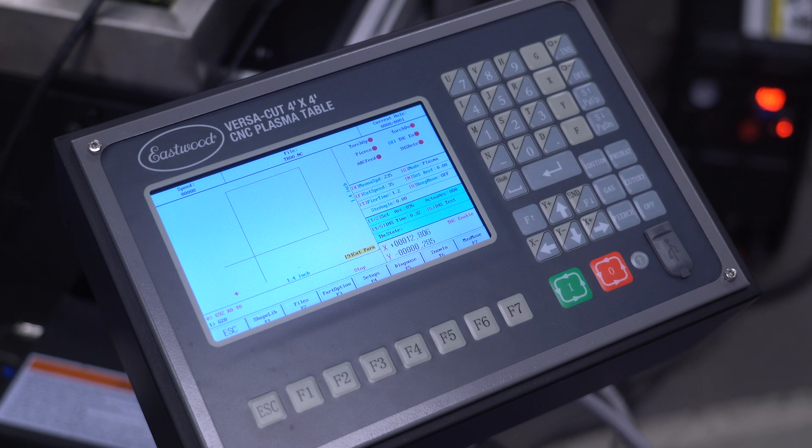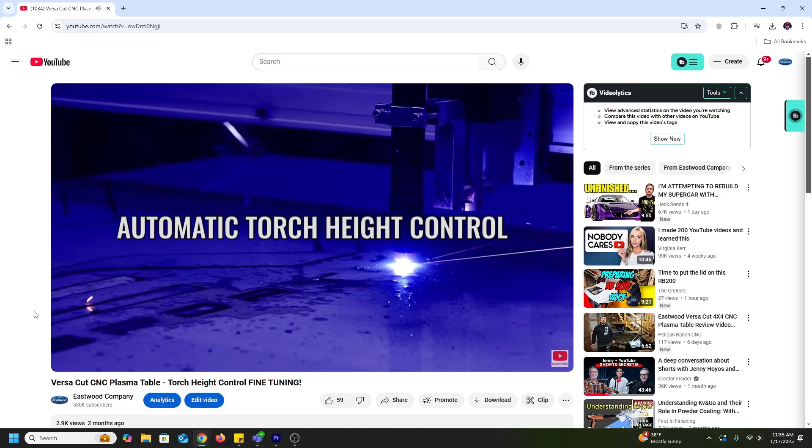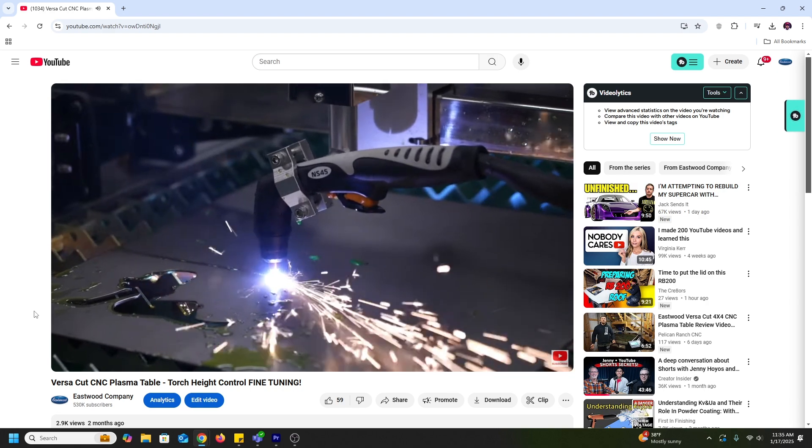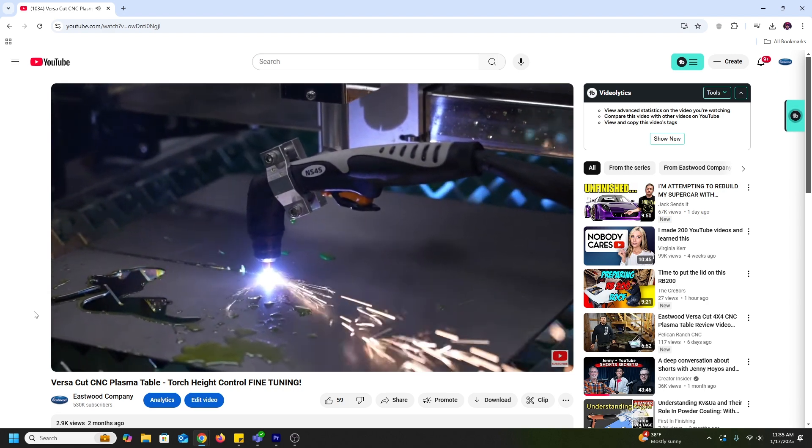We also need to make sure the automatic torch height control settings are good to go. Check out our video here on how to dial those in. Be careful with the initial height because if it's too close slag blowback can wipe out a nozzle fast.